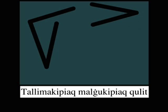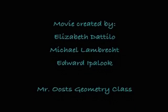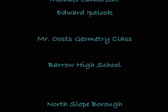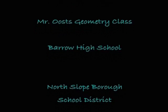In the 20s place is a 5 and a 2, which has a value of 140. It is called talima kipiak malagukh kipiak.